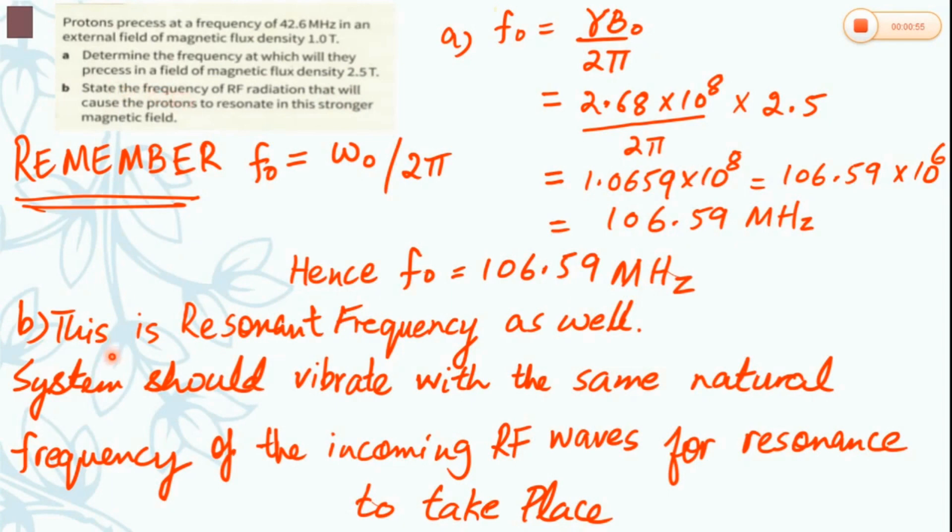Part B asks for the frequency of radio frequency radiation that will cause the proton to resonate. In order to resonate, for resonance to take place, the incoming radio frequency waves and the frequency of vibration of the system should be the same. So 106.59 megahertz is the resonant frequency as well. The system should vibrate with the same natural frequency of the incoming radio frequency wave for resonance to take place.